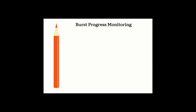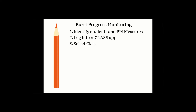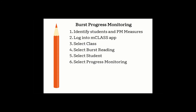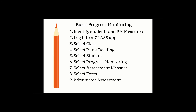Let's take a quick moment to review the steps for BIRST progress monitoring. First, identify student names and required progress monitoring measures. Next, log in to the mClass app. Then select the class. Select BIRST reading. Select the student. Select progress monitoring. Select the required assessment measure. Select the next available form. Administer the assessment. And finally, sync results and/or log out.